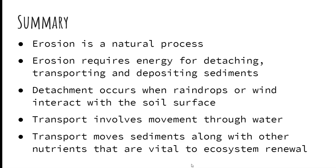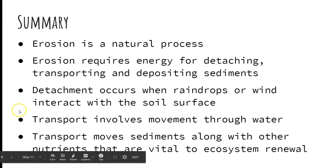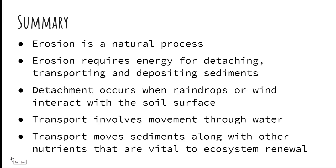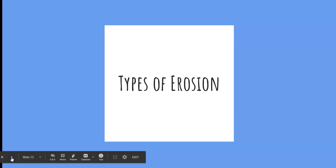In summary, erosion is a natural process that requires energy for the detachment, transport, and deposition of sediments. Detachment occurs when raindrops or wind interact with the soil surface. Transport involves the movement of sediments through water, and not only are sediments moved — nutrients and other vital materials for ecosystem function are transported as well. Next, I'll be talking about the types of erosion.